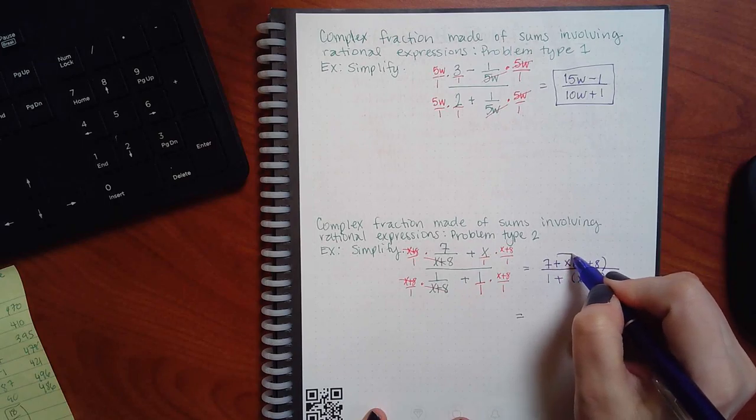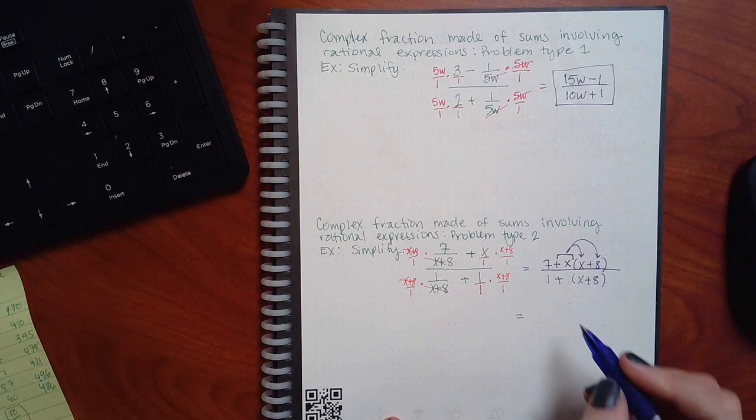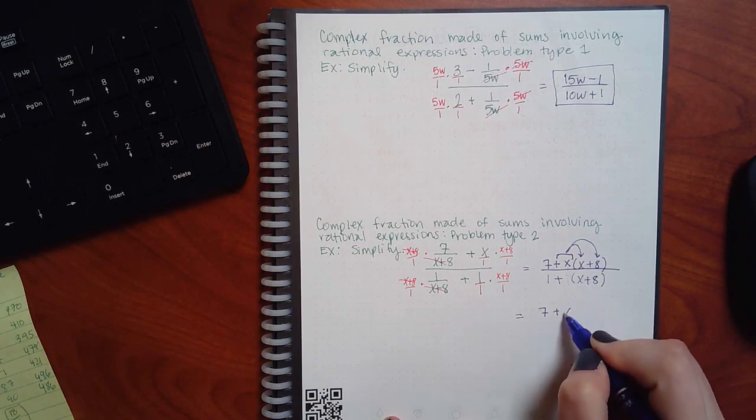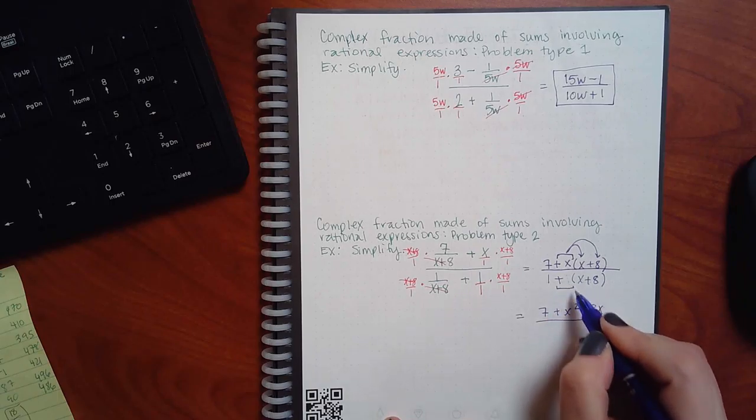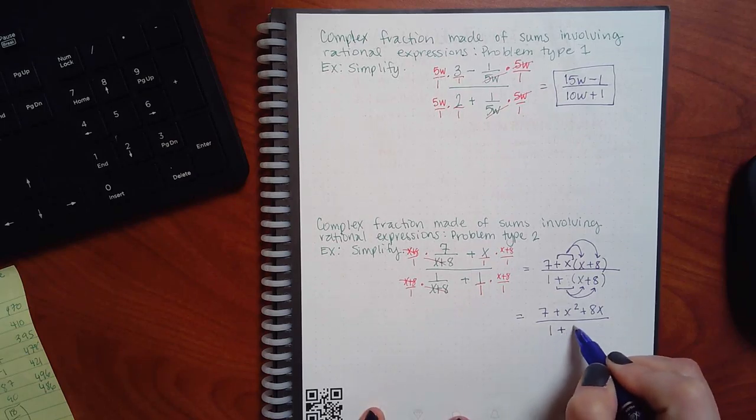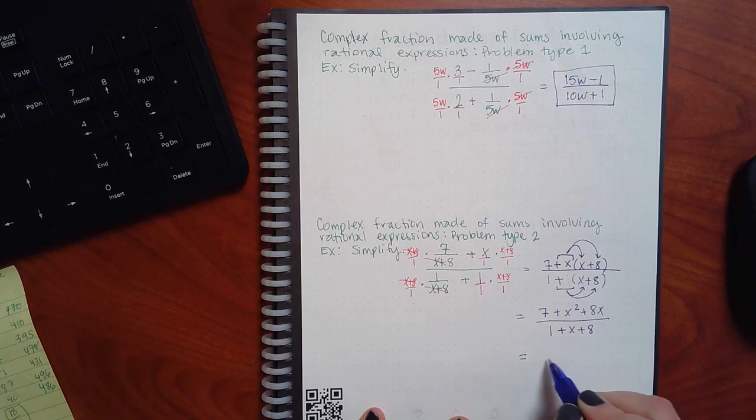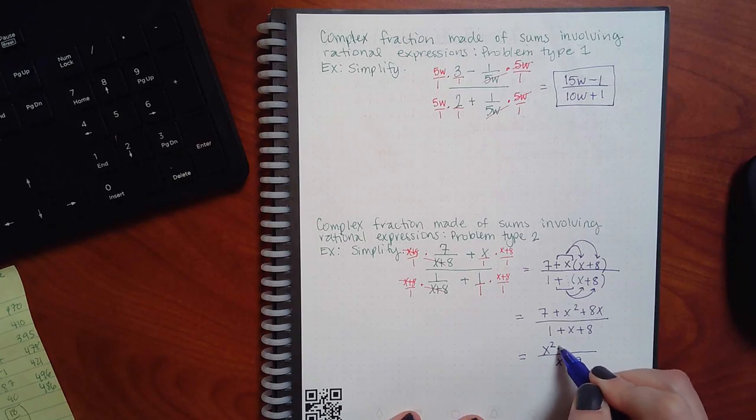And I cannot determine what the factors of the whole numerator are until I have everything. So, what I'm going to do here is I'm going to take this positive X and I'm going to distribute it to see what we have now. So, X squared plus 8X. Positive X squared and positive 8X. At the bottom, I would take this positive 1 and distribute that. So, here I get 1 plus X plus 8. Now, at the bottom, I have X plus 9 if I combine my numbers. At the top, I want to write that in the correct order. So, I'm going to put X squared plus 8X plus 7.